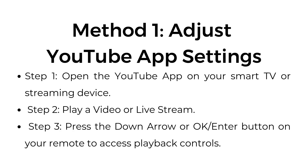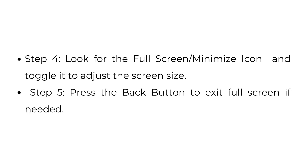Method one: Adjust YouTube app settings. Step one, open the YouTube app on your smart TV or streaming device. Step two, play a video or live stream. Step three, press the down arrow or OK/Enter button on your remote to access playback controls. Step four, look for the full screen or minimize icon and toggle it to adjust the screen size. Step five, press the back button to exit full screen if needed.